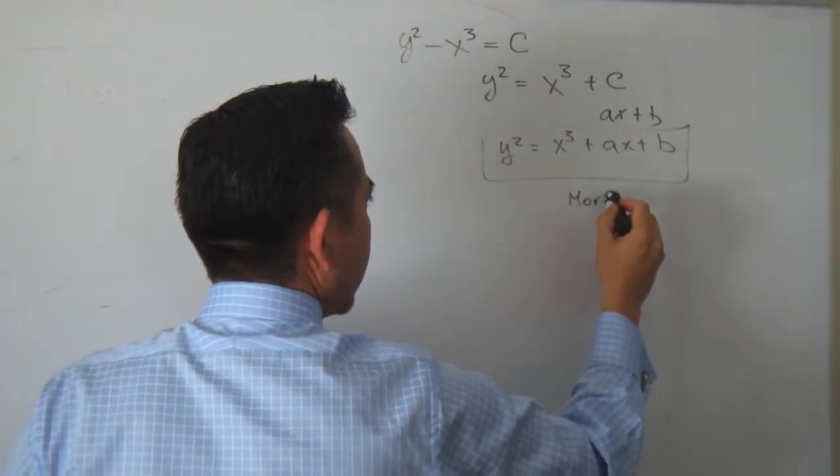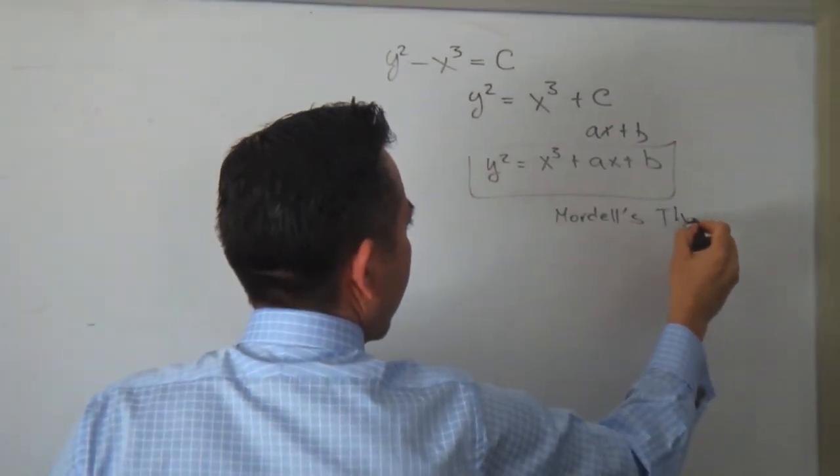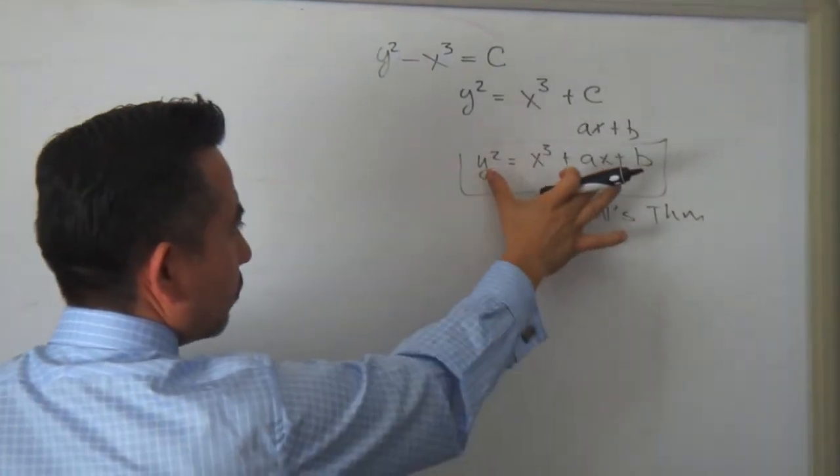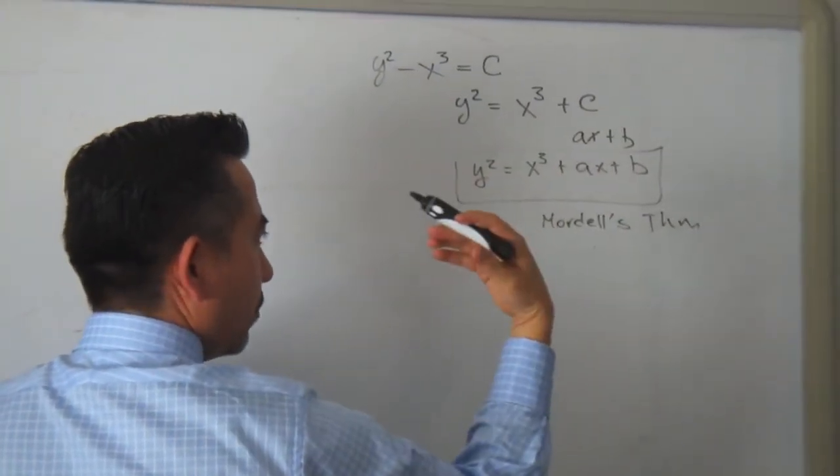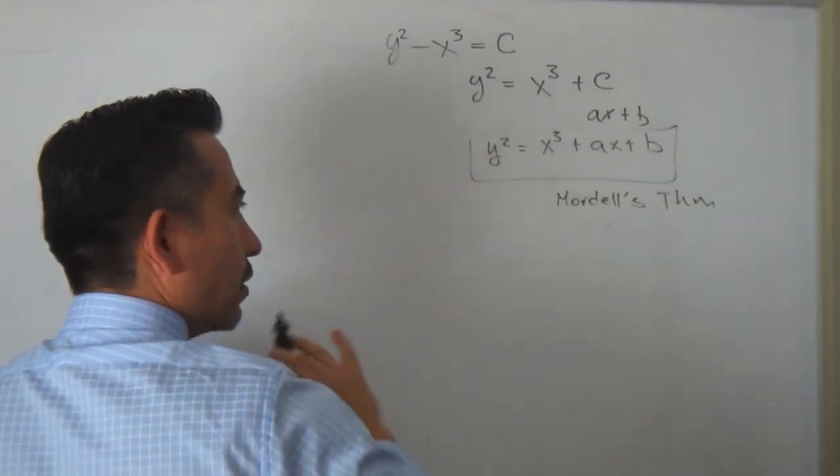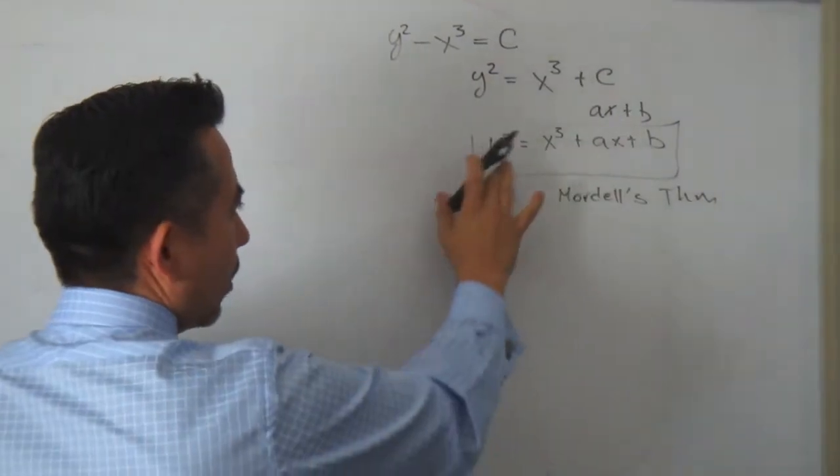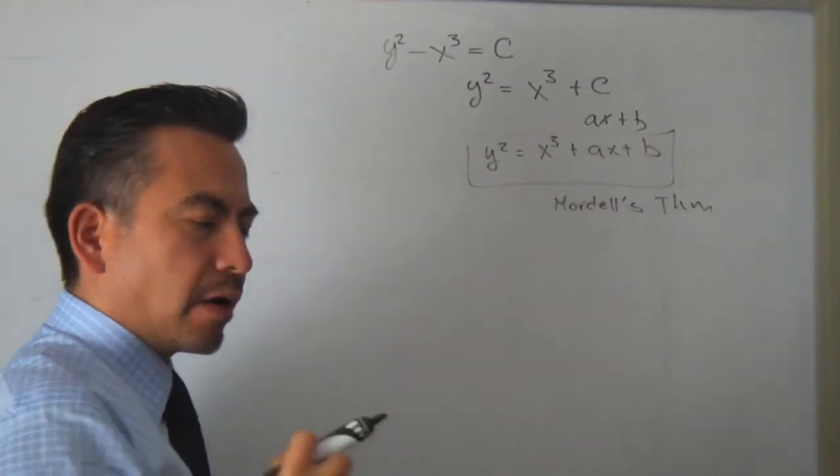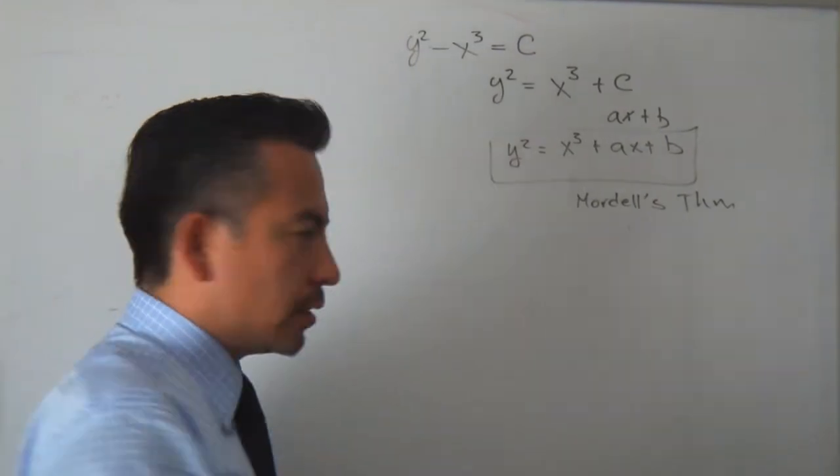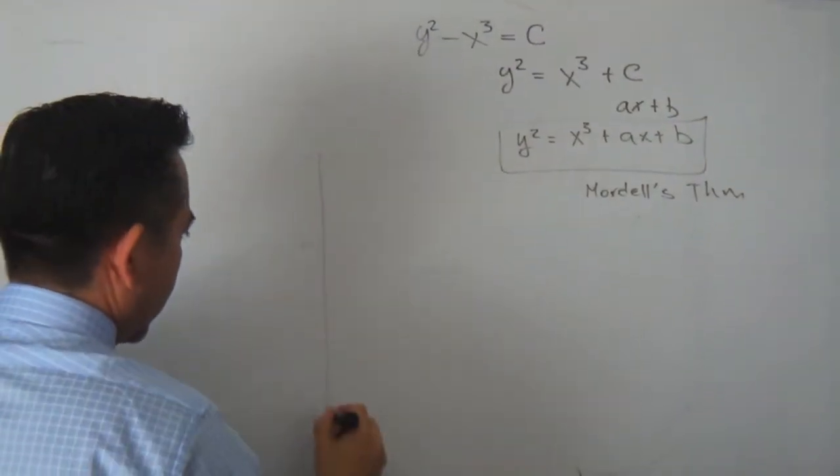it says that if we have this function of degree 3, and I will intersect with another line of degree 1, I will have three rational roots, three intersections. Let's go see how it's going to look.